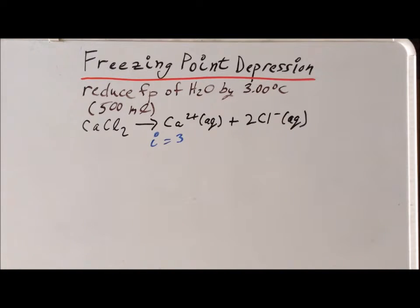So now, we want to ultimately figure out which mass, or what mass, of calcium chloride has to be added to our 500 milliliters of water so that the freezing point would drop by three degrees centigrade.